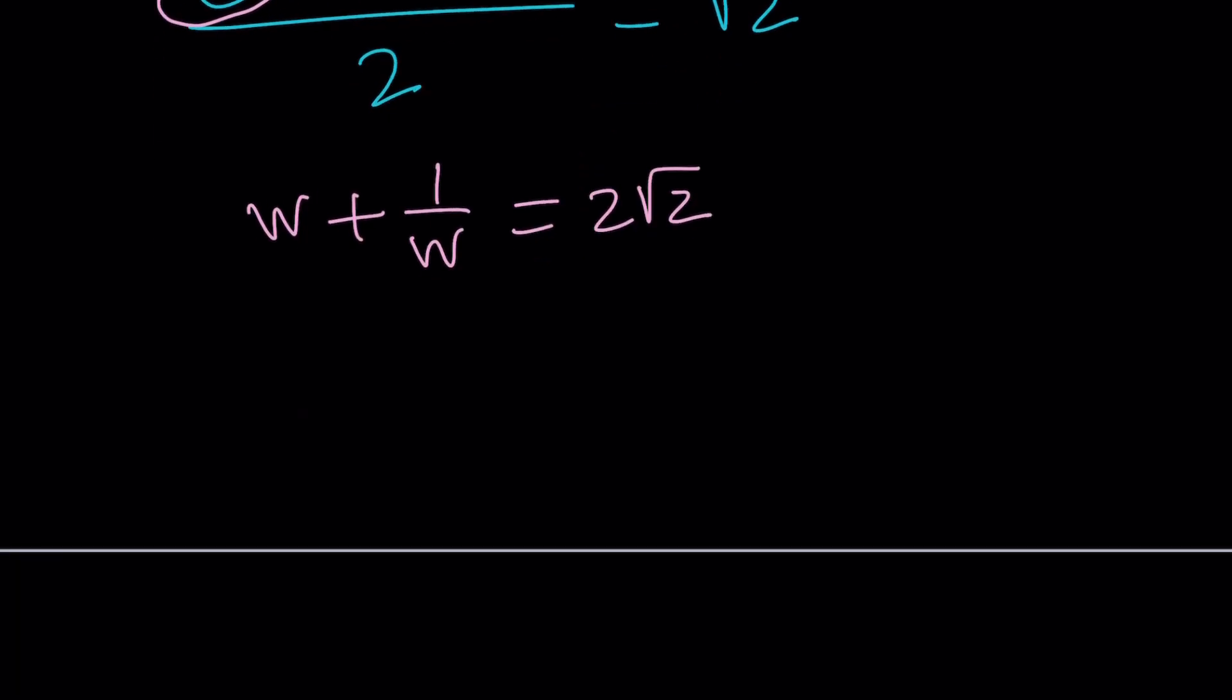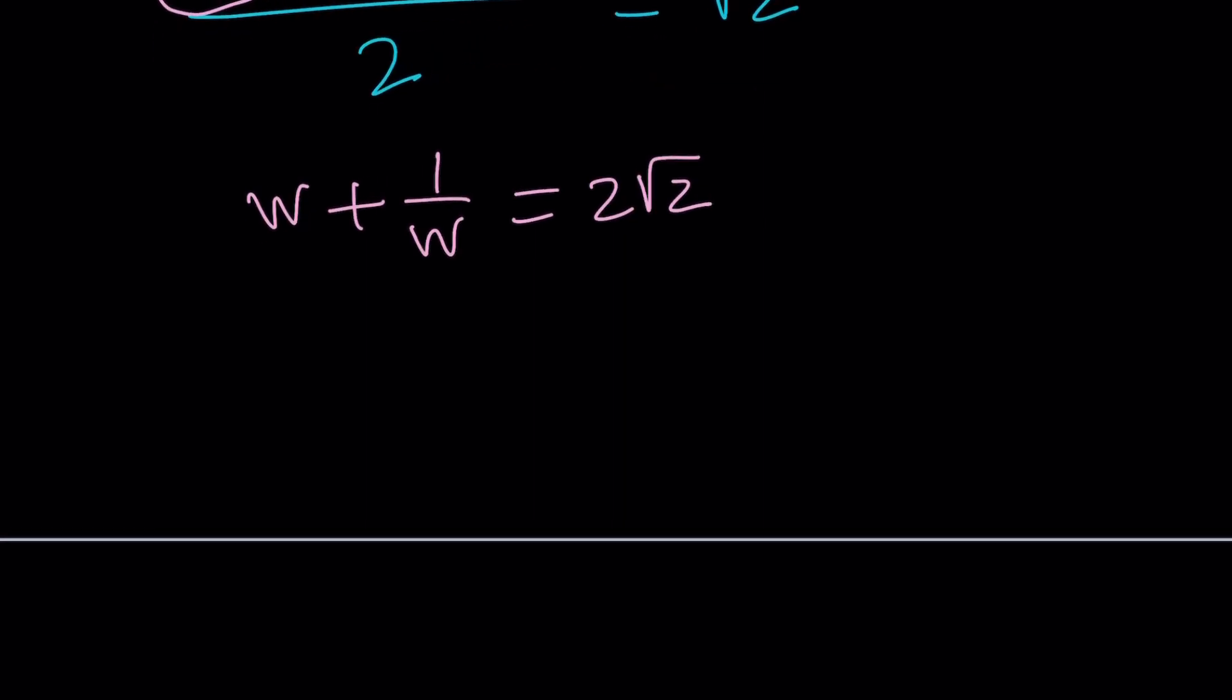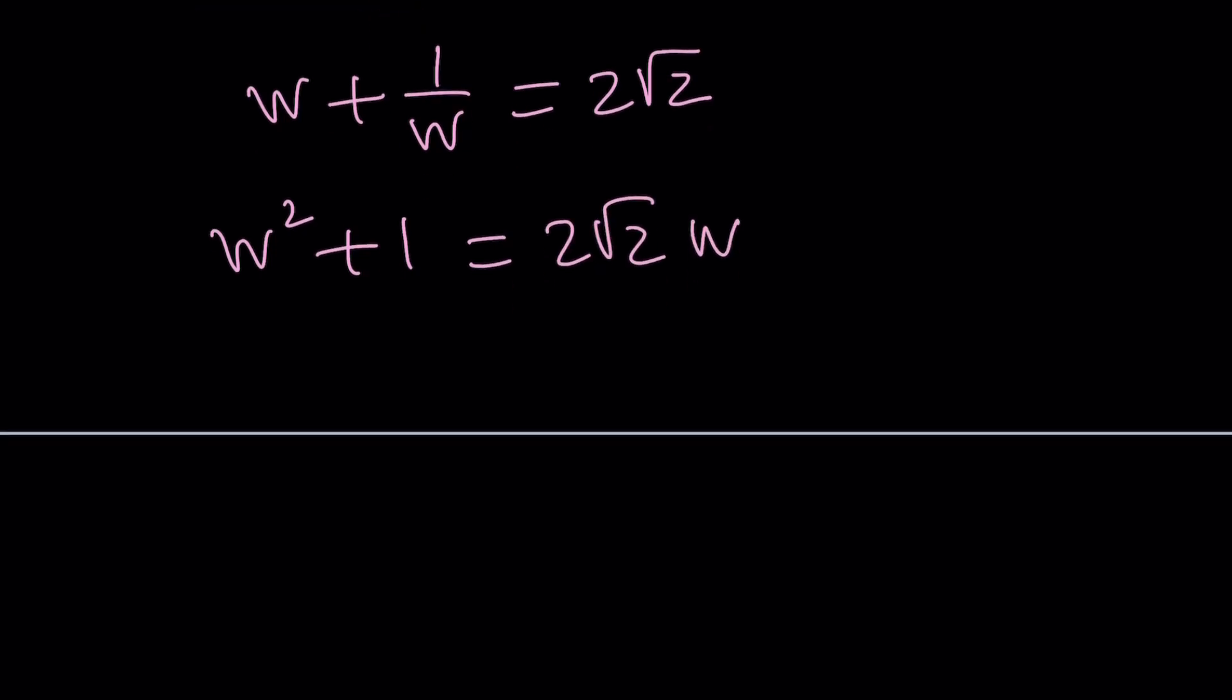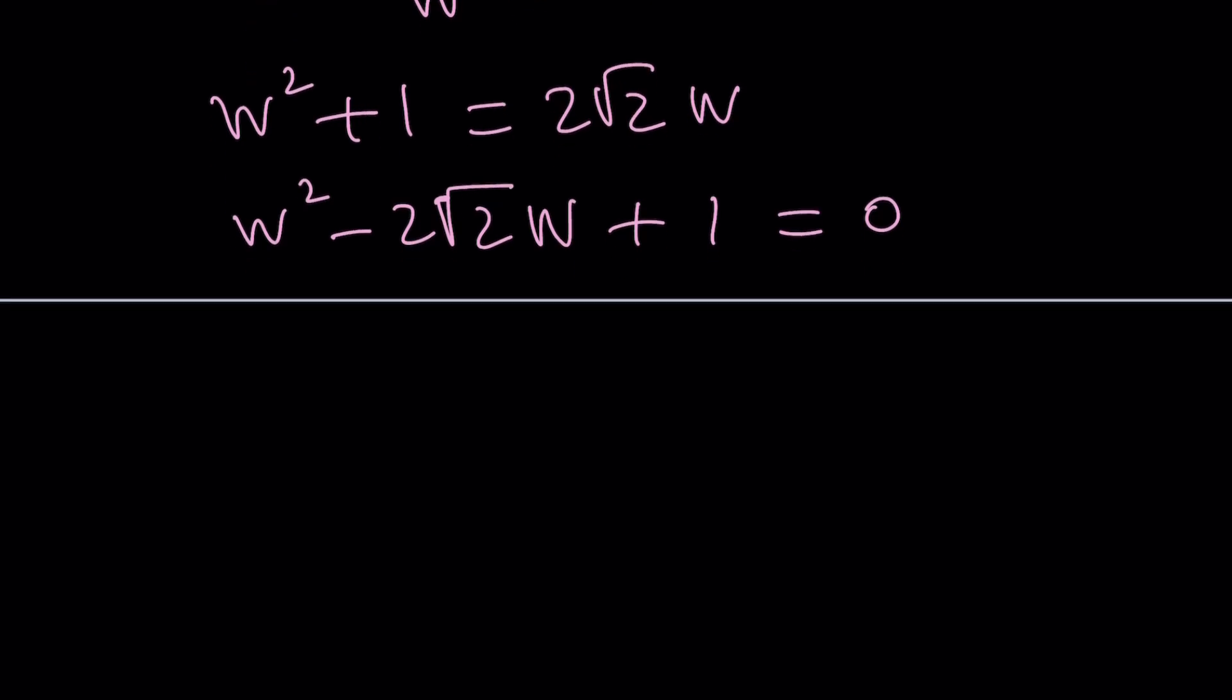Because it's just another complex number, isn't it? So now we get W plus 1 over W equals 2 root 2. And the next step, multiply both sides by W. The power of substitution is awesome, right? And then we're going to solve for W. W squared plus 1 equals 2 root 2 W. And then we can kind of put everything on the same side and then use the quadratic formula.